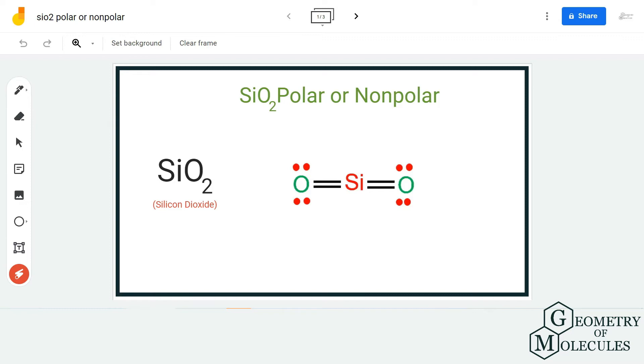its shape, and then we check if the bonds are polar and if there is a net dipole moment in this molecule. Now, SiO2 is a simple molecule because it is made up of one silicon